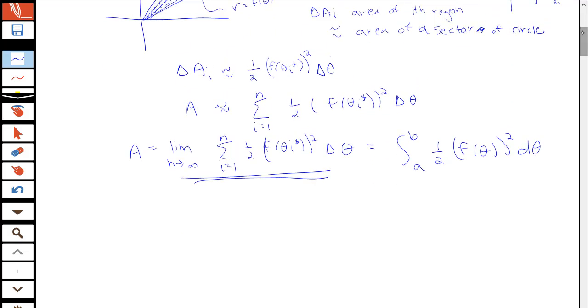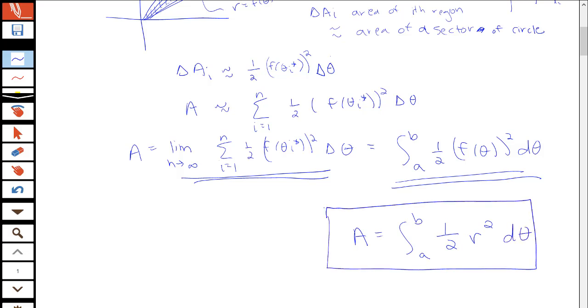So this gives us our formula. We'll say that our area is equal to this one-half f of theta squared d theta, the integral of that. Or sometimes we'll just shorten the formula and say the area is this integral from a to b of one-half times the radius squared d theta. And then we'll replace r with whatever our polar curve is in our given problem.